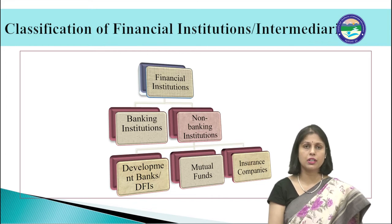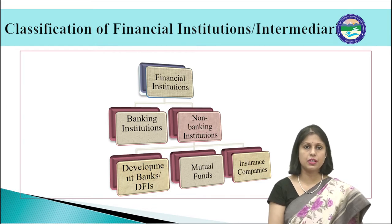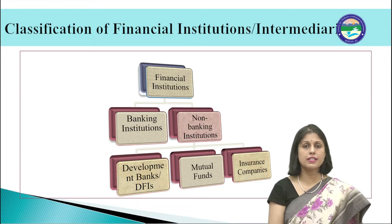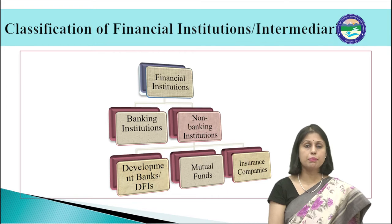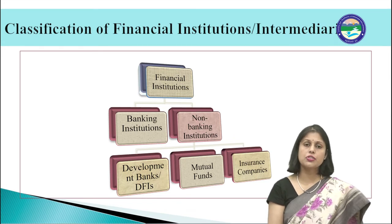Another non-banking institution is insurance companies. Insurance is a means of protection from financial loss against the risk of contingent or uncertain loss. An entity which provides insurance is known as an insurer or insurance company, and a person or entity who buys insurance is known as the insured or policyholder. This concludes the discussion on financial institutions.